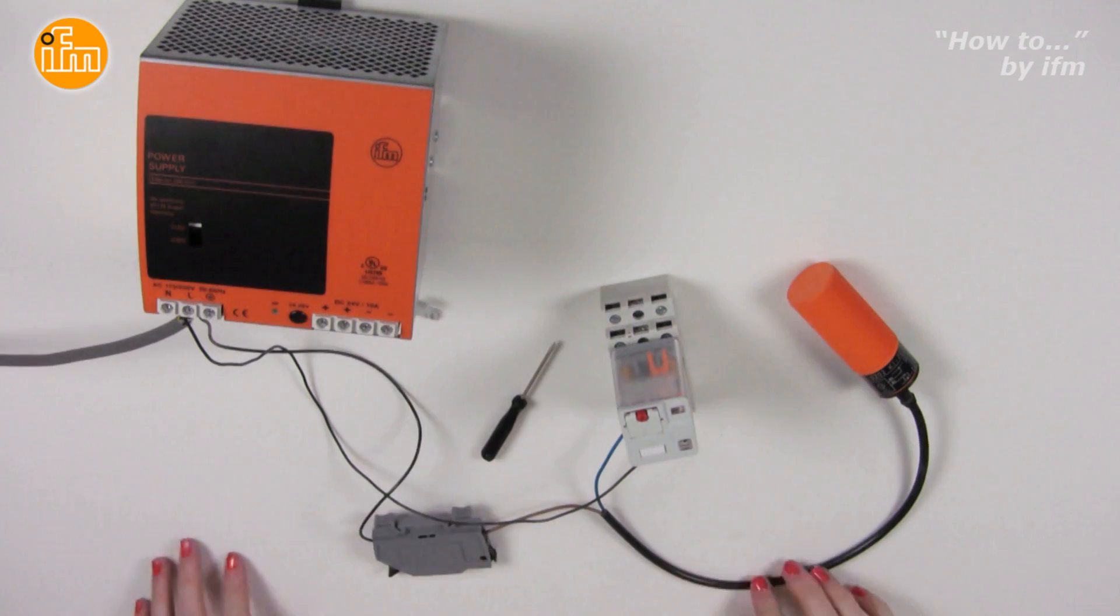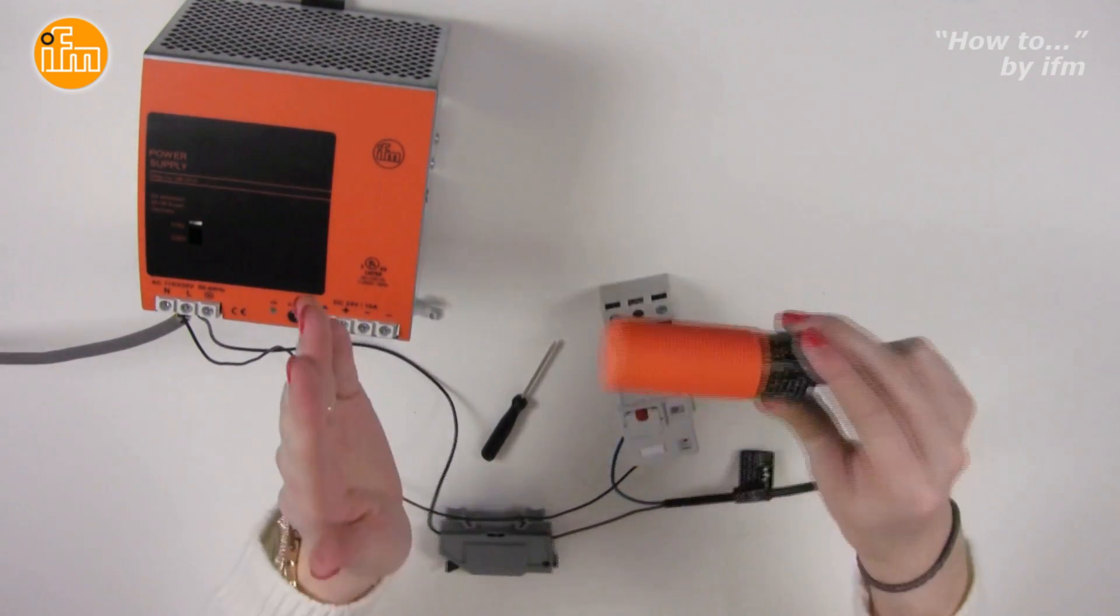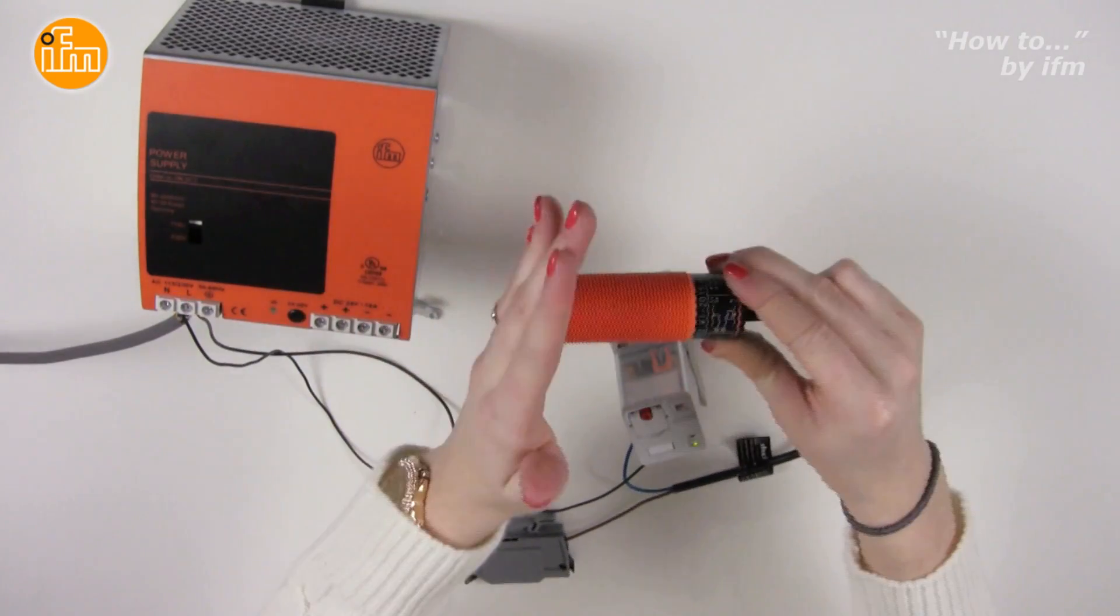Test the connections by turning on the power supply. As I place my hand in front of the capacitive sensor, I can see the LED on the relay, as well as hear the click of the relay cycling.